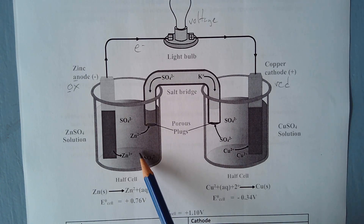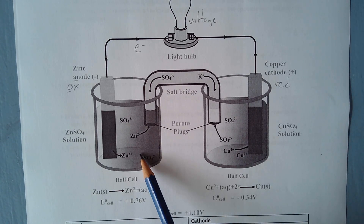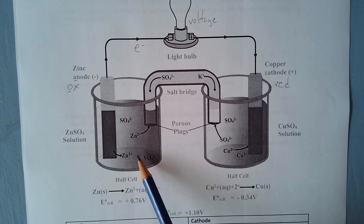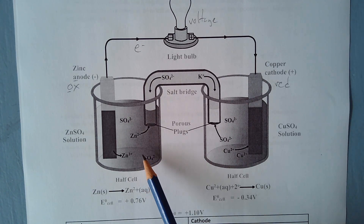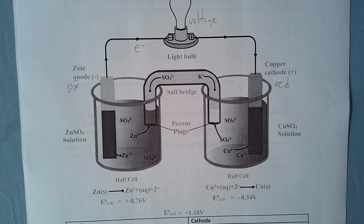When you have a battery that works off a chemical reaction, your maximum voltage is at the beginning, and then as time progresses your voltage decreases to eventually a point where there is no longer any voltage because your reaction has ceased to occur. Now let's look at what the salt bridge is doing.